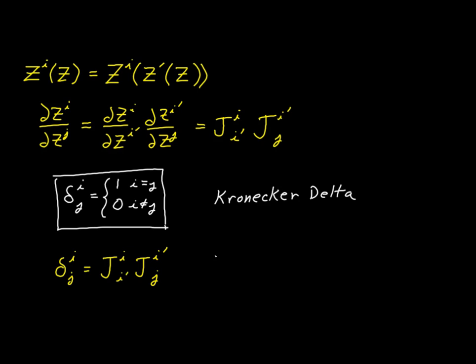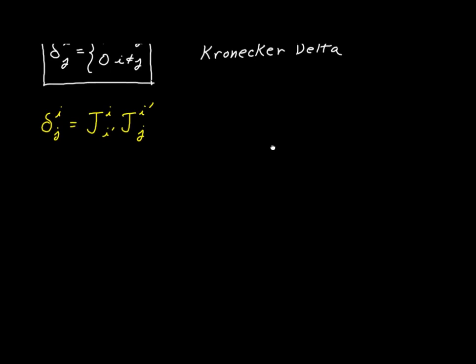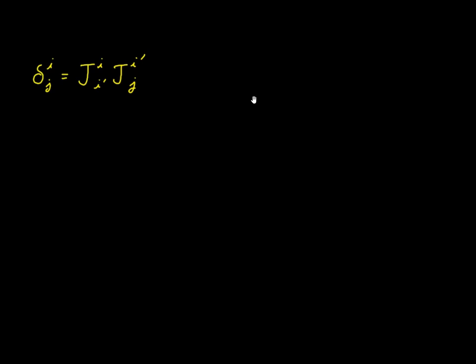As with any doubly indexed term, it is possible to express that as a matrix, and sometimes it's a lot easier to see that than just listing out the terms. There are nine terms here. You can immediately see that three of them are going to be equal to one and the other six are going to be equal to zero, because there are only three cases where the two indexes are equal. Let's express the Kronecker delta as a matrix, using i for the rows and j for the columns.